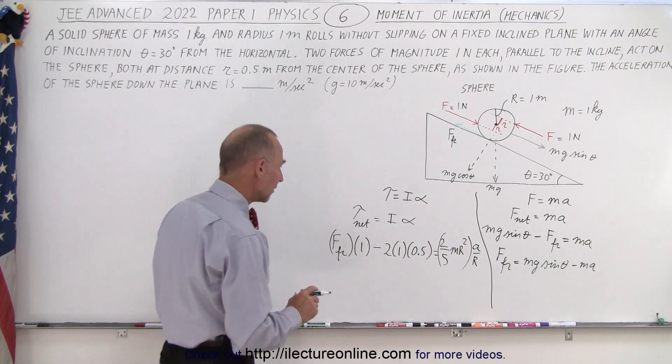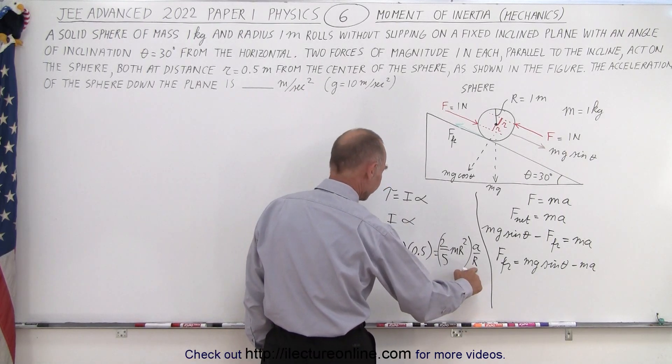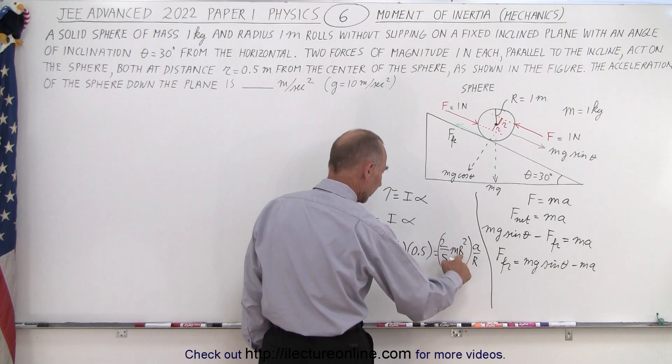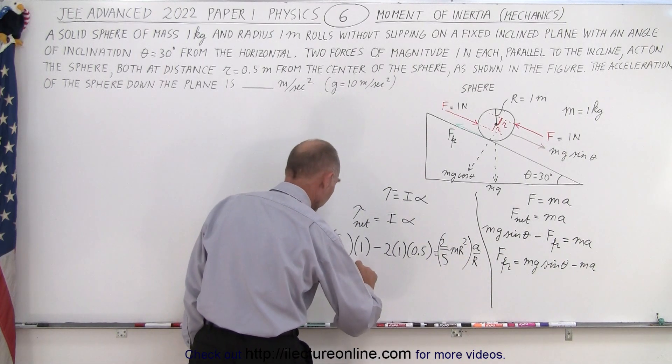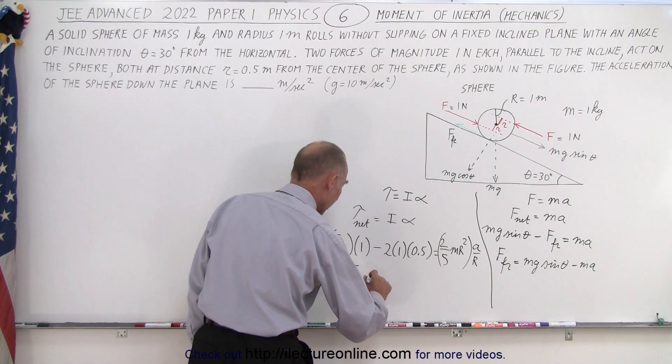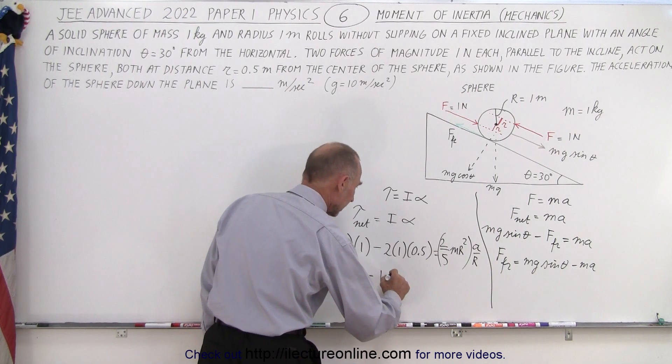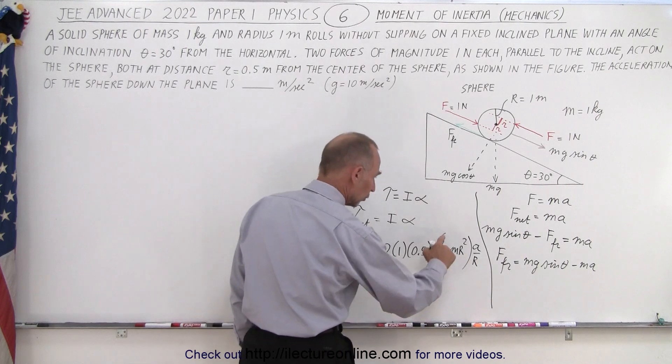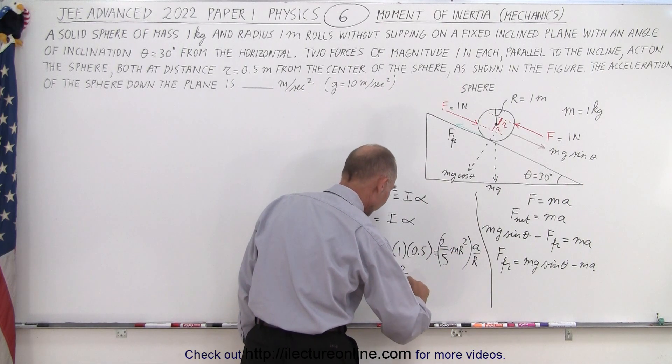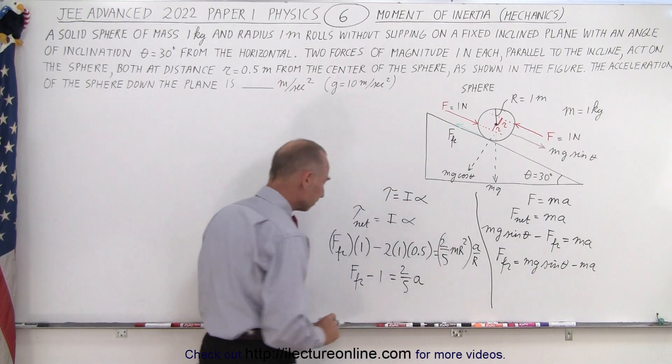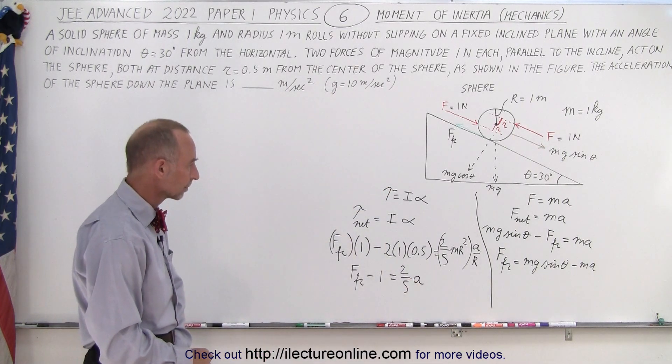So, now that we have that, notice this is one. This is one. The mass is one. So, essentially this all reduces to force friction minus one equals two fifths times one times one times A. So, two fifths A.